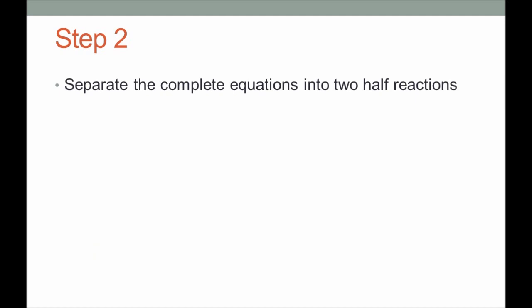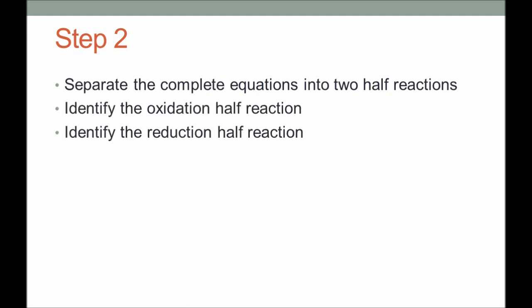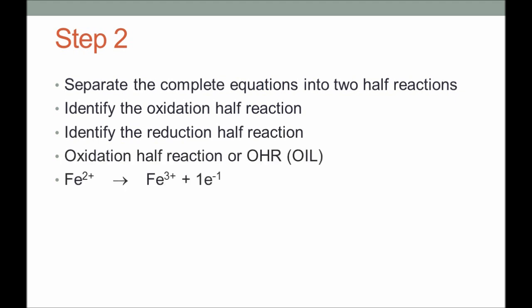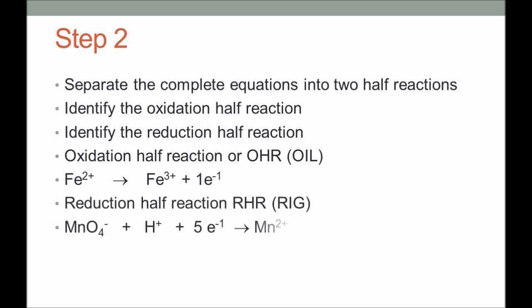The next step is to separate the equation into two half-reactions: identify the oxidation half-reaction and the reduction half-reaction. The oxidation half-reaction is Fe²⁺ → Fe³⁺ + 1e⁻. The reduction half-reaction is MnO₄⁻ + H⁺ + 5e⁻ → Mn²⁺.